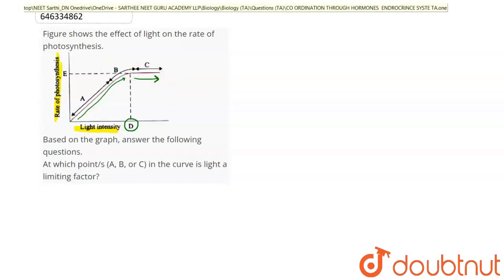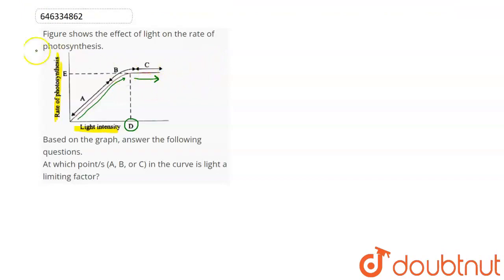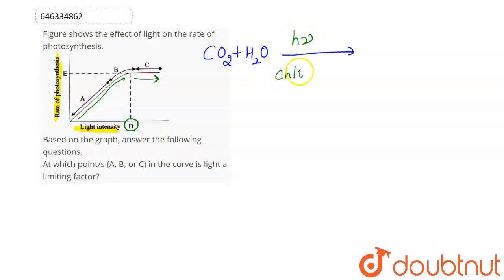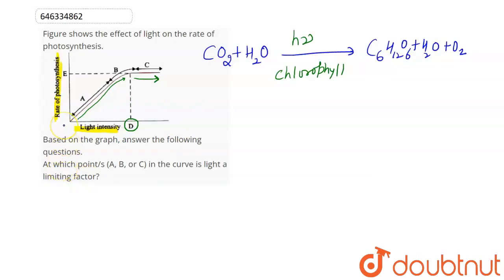Photosynthesis rate depends on the limiting factor. To carry out photosynthesis, carbon dioxide reacts with water in the presence of sunlight and the pigment molecule chlorophyll, producing glucose and releasing water and oxygen. To carry out this reaction, the amounts of CO2, water, sunlight, and chlorophyll all matter. The factor present in the least amount — the limiting factor — will decide the rate of photosynthesis.